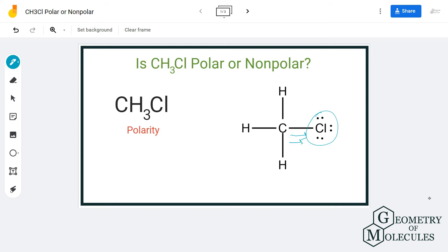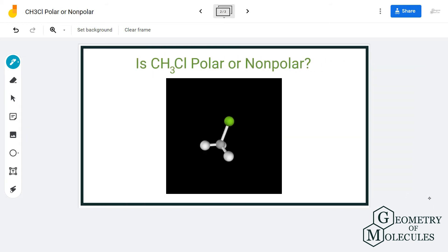In this structure, the green dot represents the chlorine atom and the central atom is the carbon atom. Due to the higher electronegativity of chlorine atom, it will have a pull on electrons, which means there is a dipole moment between carbon and chlorine atom.